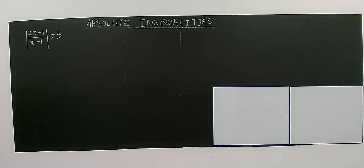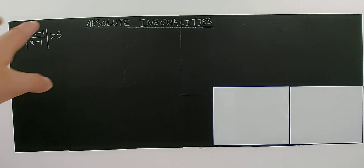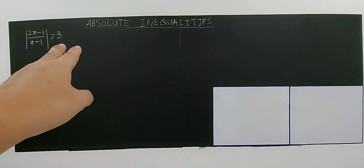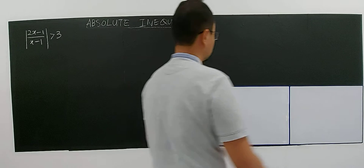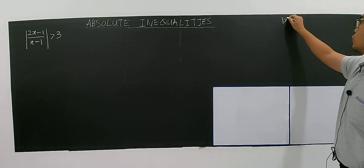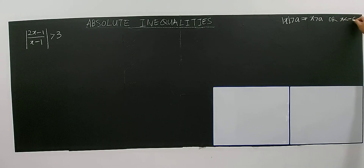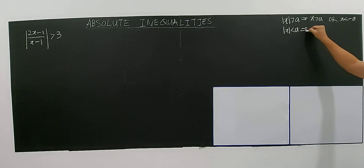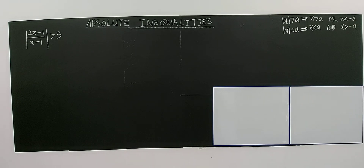Let's look at another type of absolute inequality: the modulus of a rational function with a number on the right-hand side. If you see only one modulus on the left-hand side and a number on the right, you apply the basic definition. The basic definition says modulus of x greater than a gives x greater than a or x less than negative a. If modulus x is less than a, everything reverses: 'greater than' becomes 'less than,' 'or' becomes 'and.' Keep practicing until you're fluent with this basic definition.